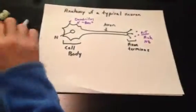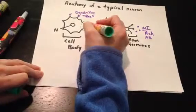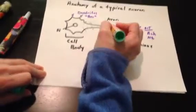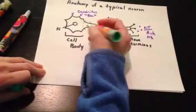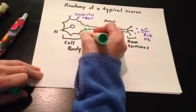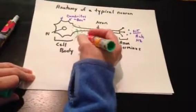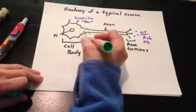This structure is functionally significant. It's the region where the cell body tapers into the axon, and it is called the axon hillock. It does have an important function in generation of the action potential on the axon.